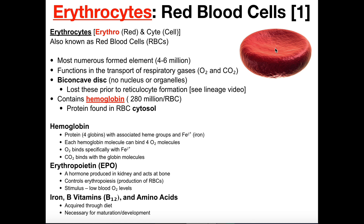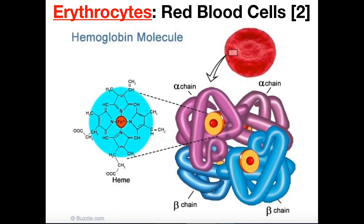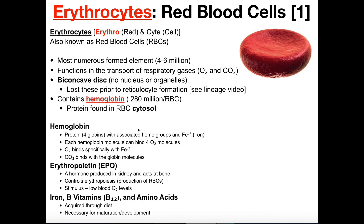Recall that red blood cells can also bind carbon dioxide, but the iron only binds oxygen. CO₂ is actually picked up by the protein portion — specific amino acids on the globin molecules covalently bind carbon dioxide. Similarly, hydrogen ions bind to certain amino acids on the globin parts. So keep these straight: oxygen is picked up by the iron of the heme, while CO₂ and H⁺ bind to amino acids on the globin protein.